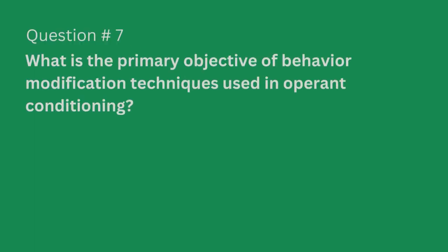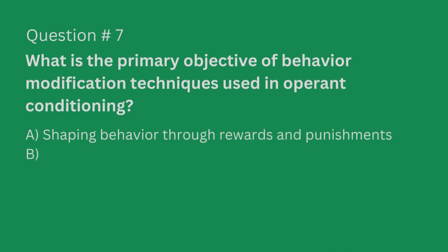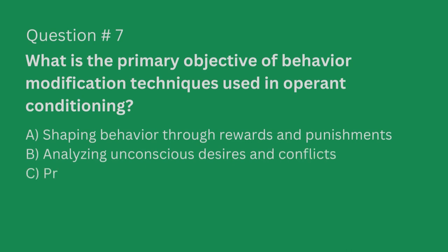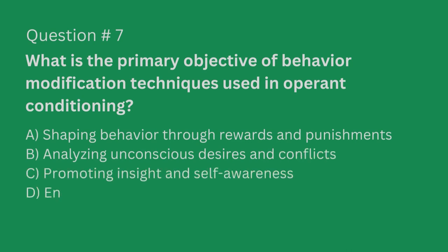Question number seven. What is the primary objective of behavior modification techniques used in operant conditioning? A. Shaping behavior through rewards and punishments. B. Analyzing unconscious desires and conflicts. C. Promoting insight and self-awareness. D. Enhancing the therapeutic alliance.